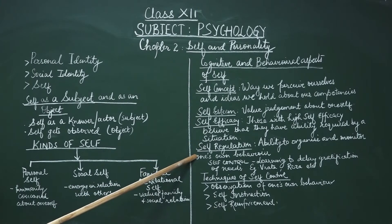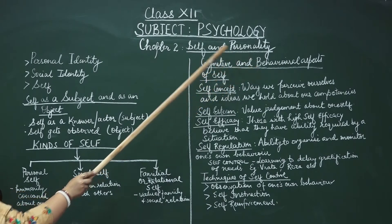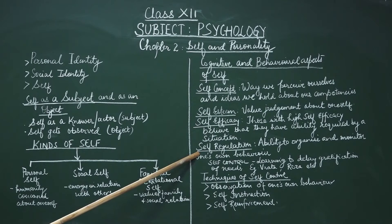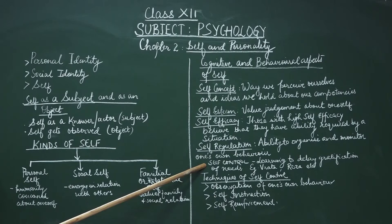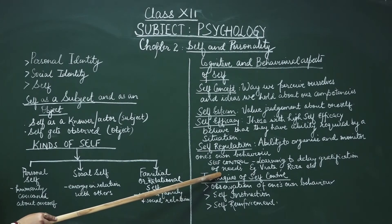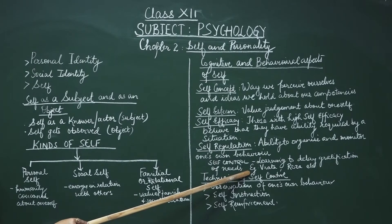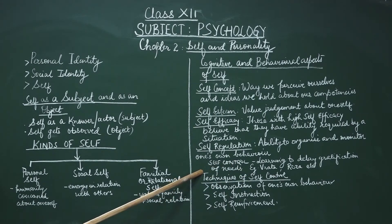Coming to the next concept: self-regulation, meaning the ability to organize and monitor one's own behavior. It is a behavioral aspect of self — we are able to control our own behavior as per the demands of the environment. It involves self-control, which means learning to delay the gratification of needs. For example, in our country the concept of vrat or roza are effective mechanisms for exercising self-control, where you can go without food for hours together.